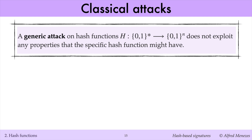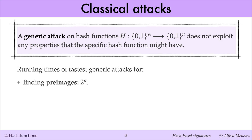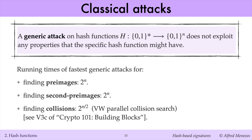A generic attack is one that applies to any hash function without relying on its specific design or weaknesses. For classical computers, the fastest generic attacks for finding preimages takes 2^n operations, for finding second preimages also takes 2^n operations, and for finding collisions takes 2^(n/2) operations. To ensure that all three attacks remain computationally infeasible, a hash function should be used whose outputs are at least 256 bits in length, ensuring that finding collisions requires at least 2^128 operations, which will be computationally infeasible for the foreseeable future.